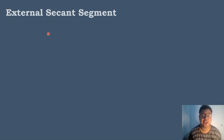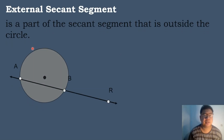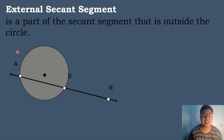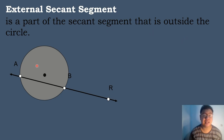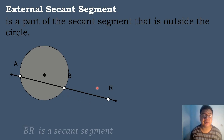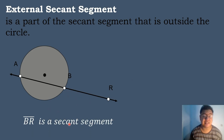We also have the external secant segment. When we say external secant segment, it is the part of the secant segment that is outside the circle. In this case, our secant segment is segment AR, and the part of the secant segment which is outside the circle is segment BR. Therefore, the external secant segment is segment BR.